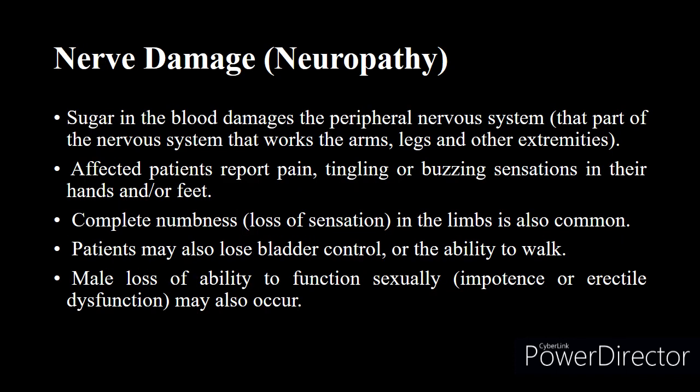The next complication is neuropathy, which affects the nerves. Sugar in the blood damages the peripheral nervous system — the part that serves the arms, legs, and other extremities. Affected patients report pain, tingling, or buzzing sensations in their hands or feet. If you hear relatives or friends describing such sensations, it is better to check their blood glucose level. Complete numbness or loss of sensation in the limbs is also common. Patients may also lose bladder control or the ability to walk, and male sexual dysfunction may also occur due to nerve damage — an acute complication of diabetes.